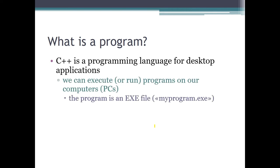C++ is a programming language for desktop applications, meaning programs that can be executed on our personal computers. We often say we can run our programs on our computer — execution and running are synonyms in this context. What we can run is called an exe file, for example 'myprogram.exe'. This is a file that can be executed on a personal computer, for example in the Windows environment.